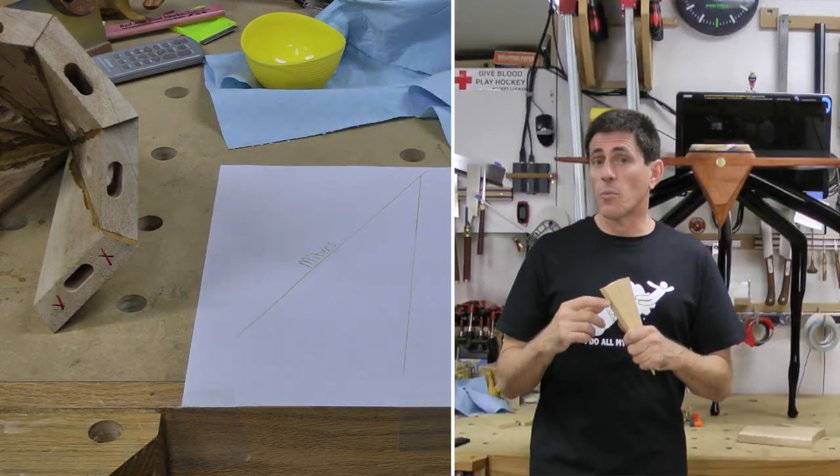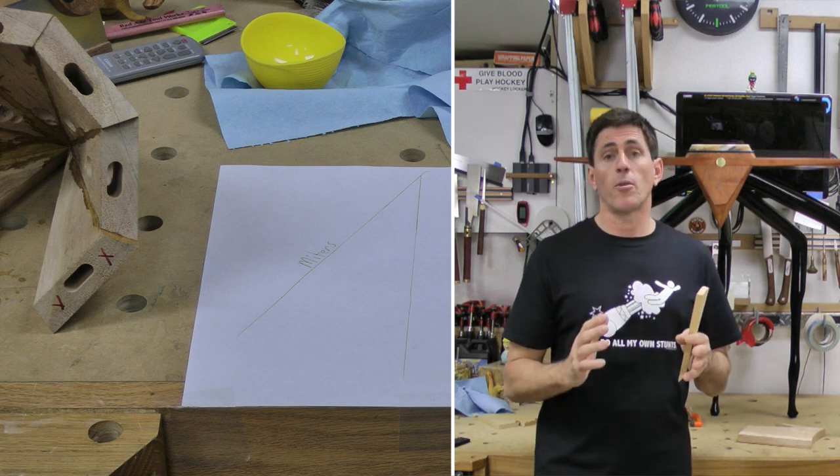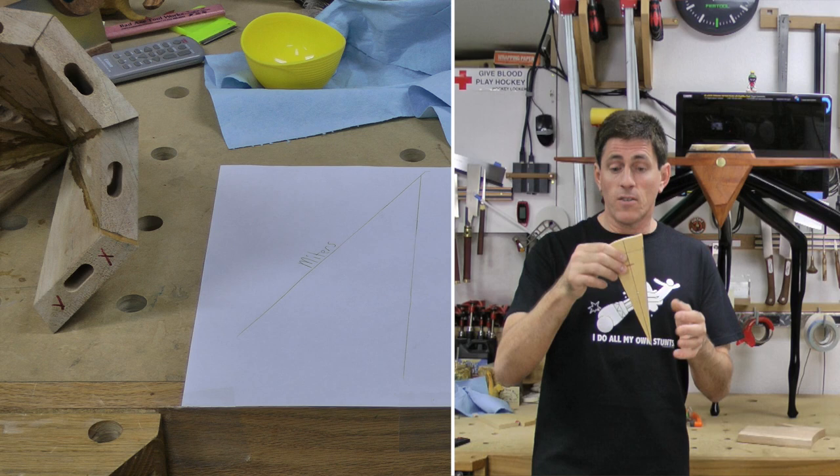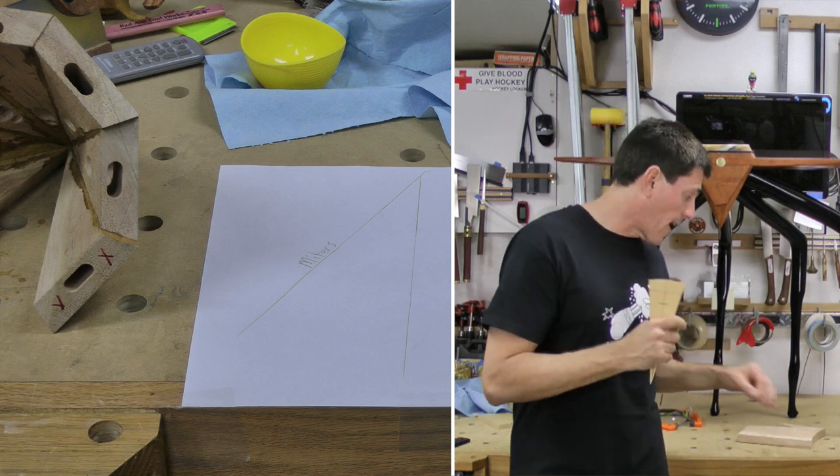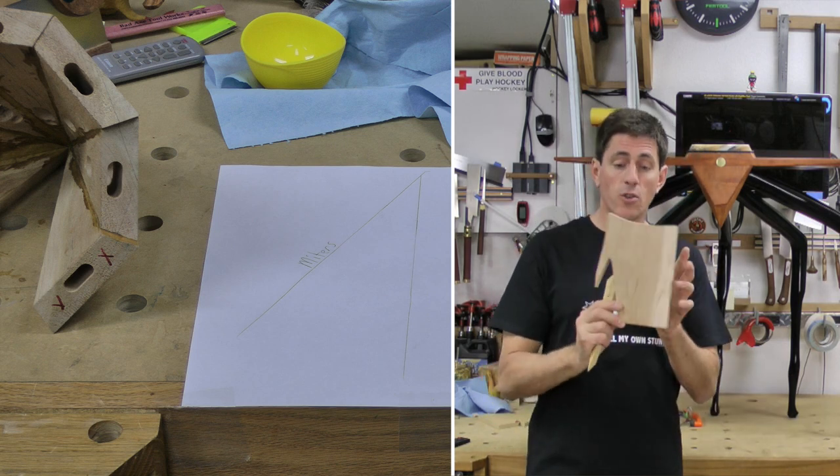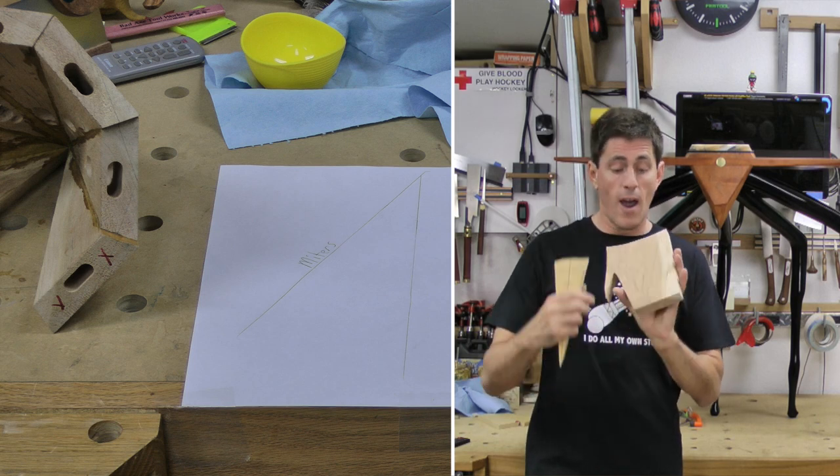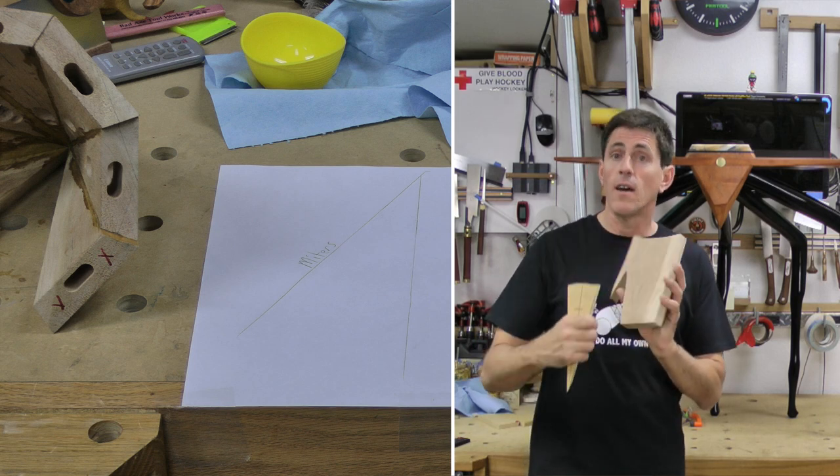Now one thing I didn't explain after I traced the miter pattern onto the paper is what the heck do you do with it? Now if you're creating a triangle like this, what I actually did when I did that is I took it and I had drawn it directly on the wood that I was gonna be cutting.